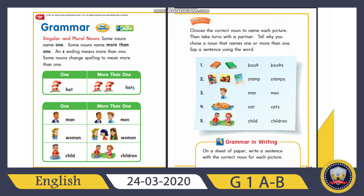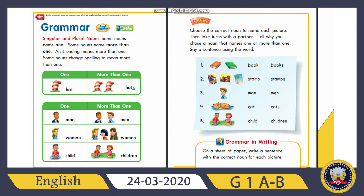Now look at page 135. Choose the correct noun to name each picture. Number one: 'book' or 'books'? Very good — books! Because here we have two books and we are talking about more than one thing. Number two: 'stamp' or 'stamps'? Stamps — because we are talking about more than one stamp.